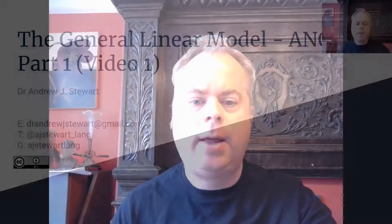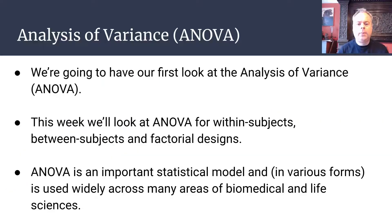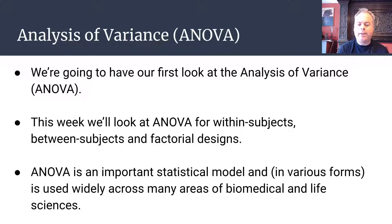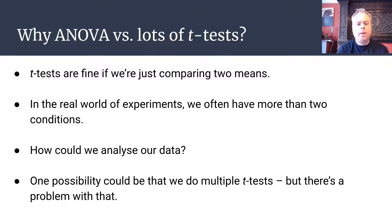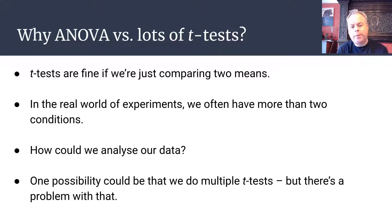So those are the four videos in this workshop, and there's lots of stuff for you to work through in R as well. ANOVA is an important statistical model, and in various forms it's used widely across many areas of biomedical and life sciences. We use ANOVA when we're interested in determining whether or not experimental conditions differ from each other.